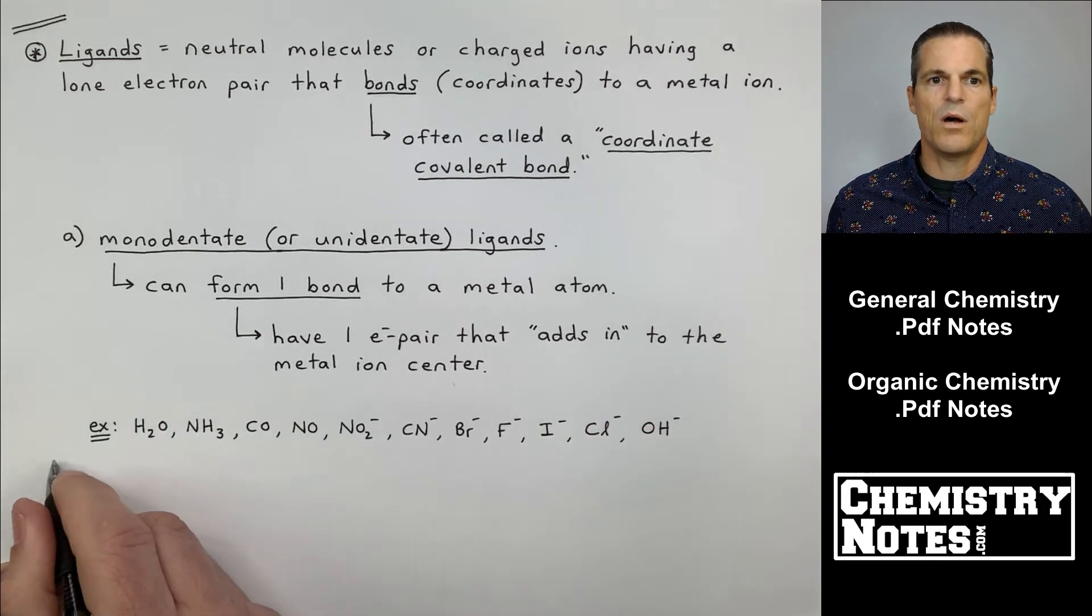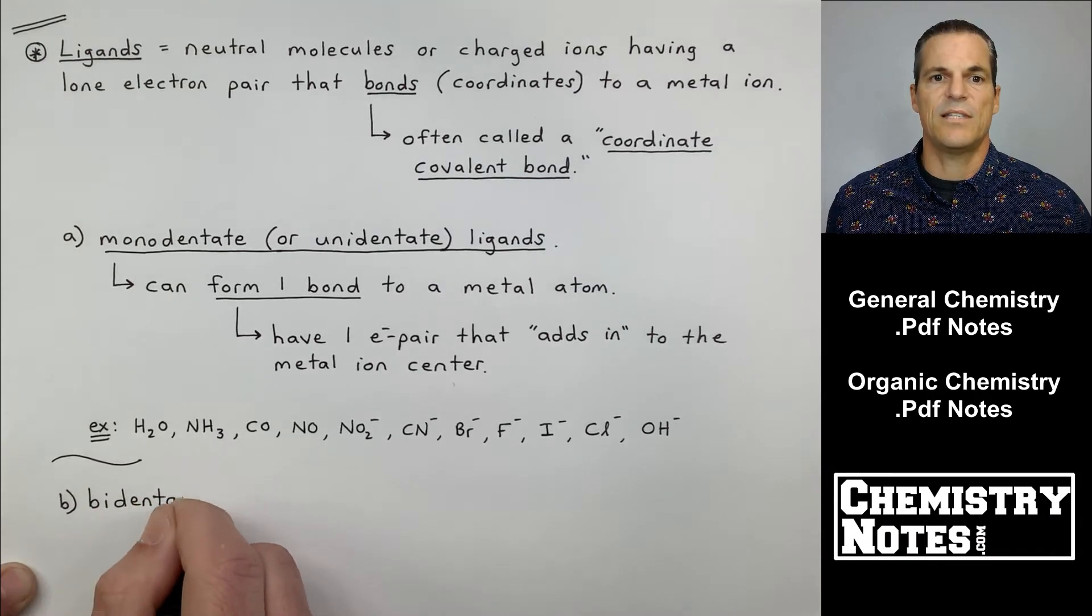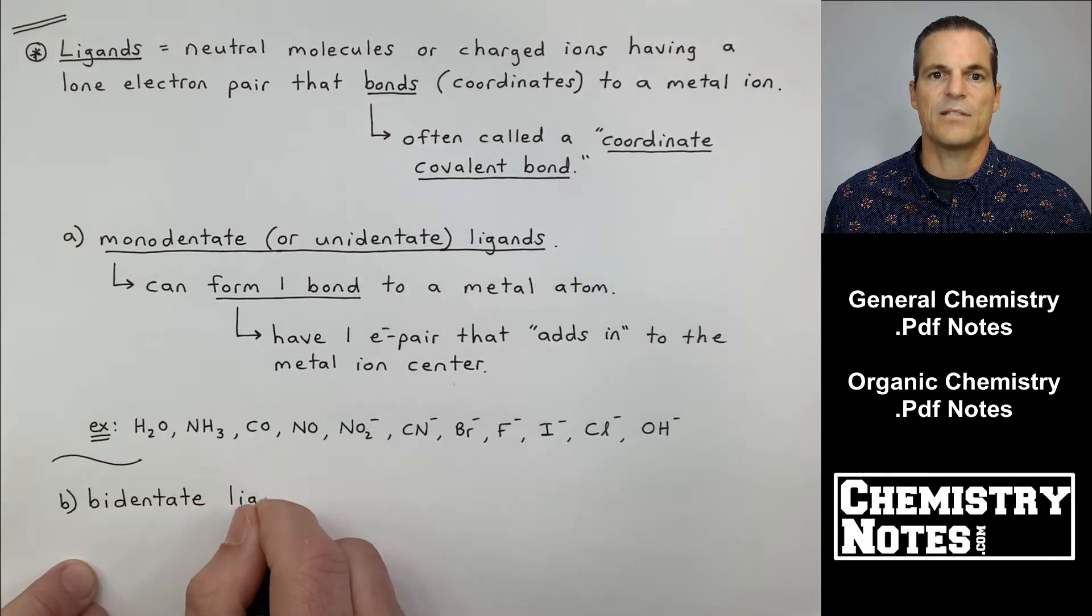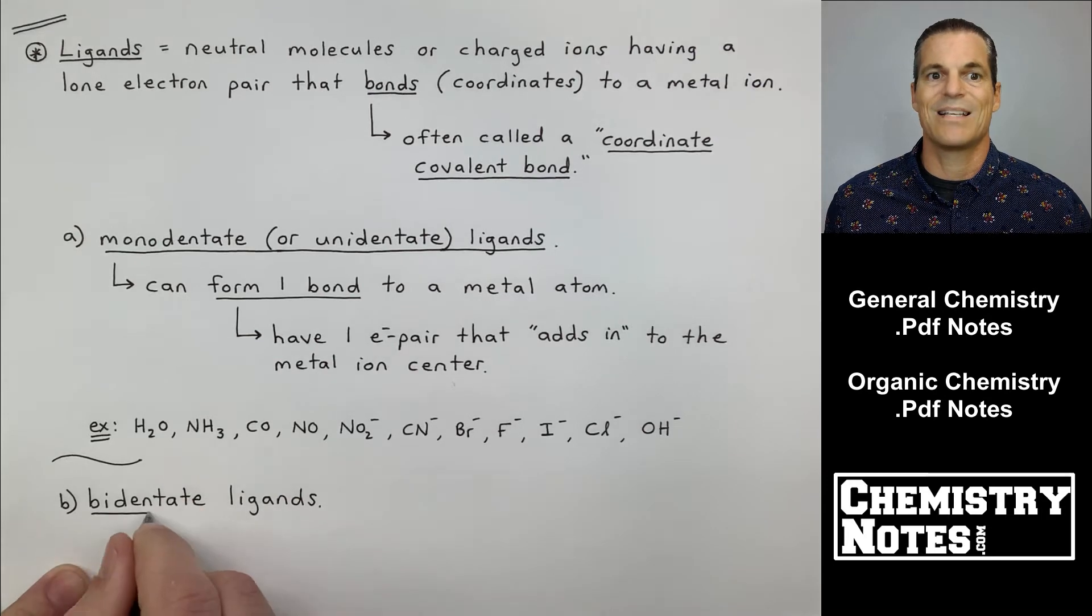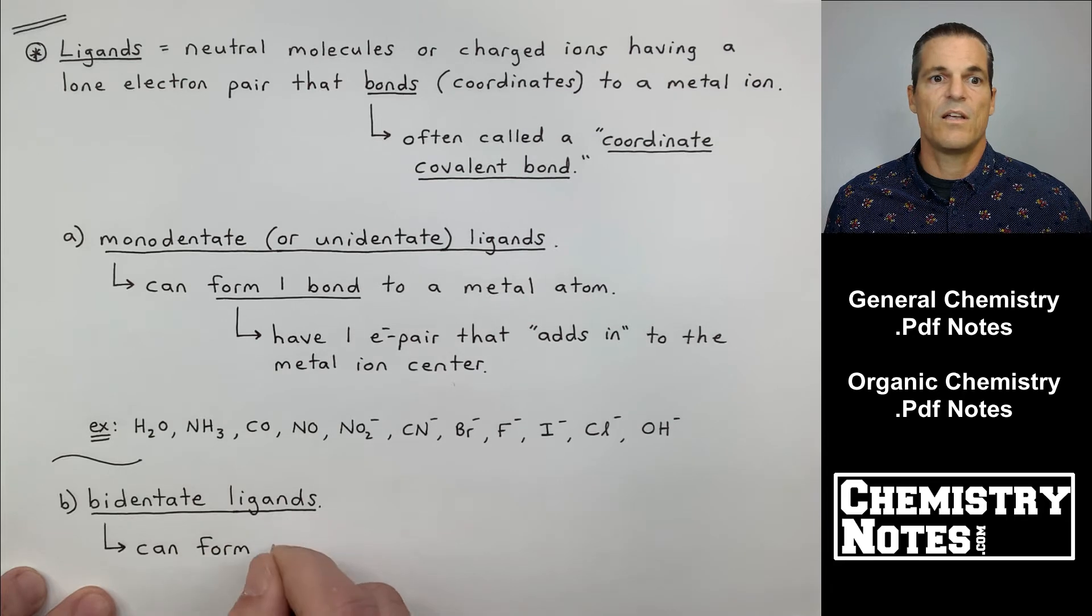Examples, H2O, NH3, CO, NO, NO2 minus, CN minus, Br minus, F minus, I minus, Cl minus, OH minus. That's a lot of examples. When in doubt, they're monodentate ligands. In fact, there's only a few bidentate ligands that I use that are common.